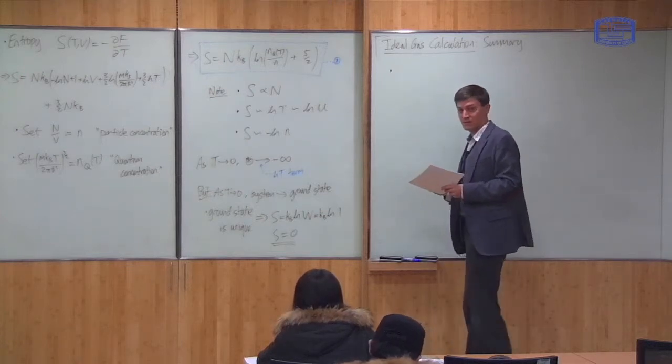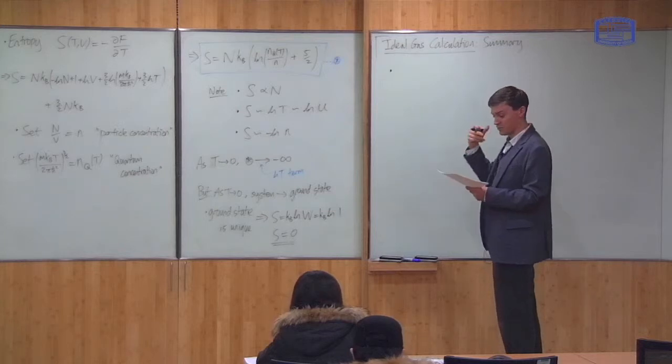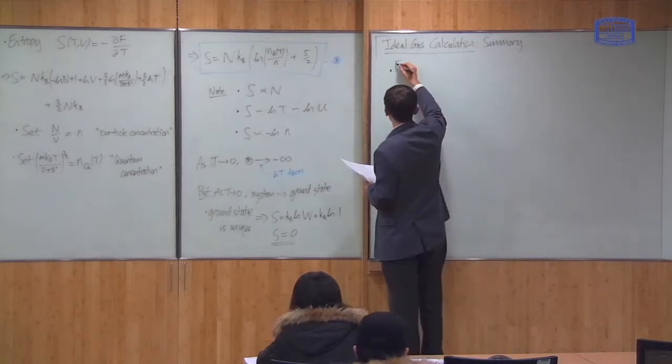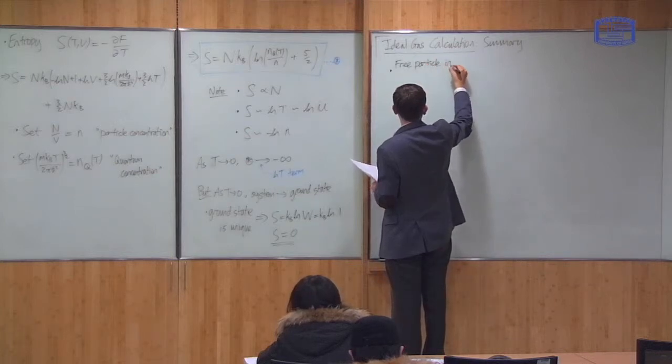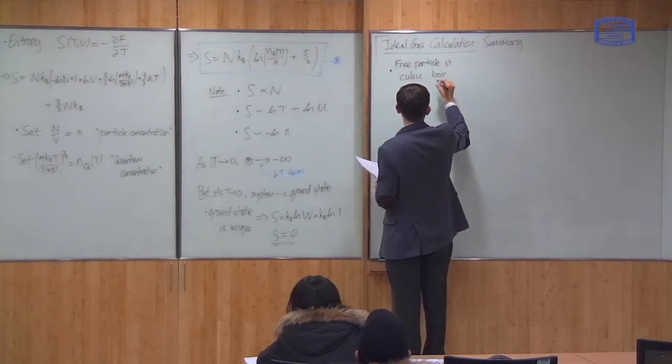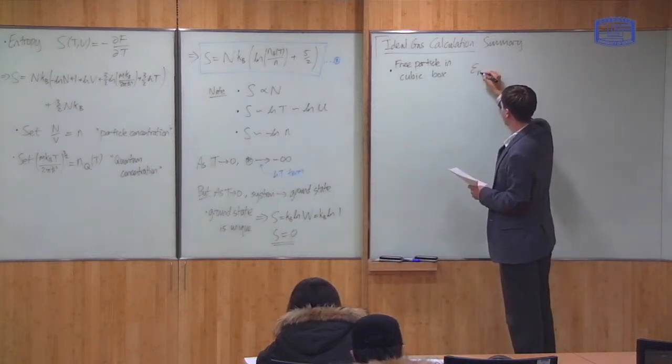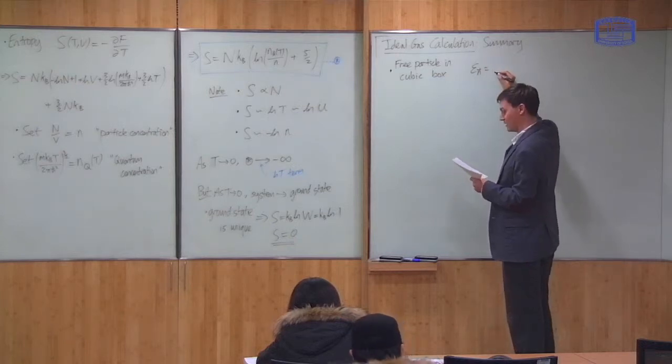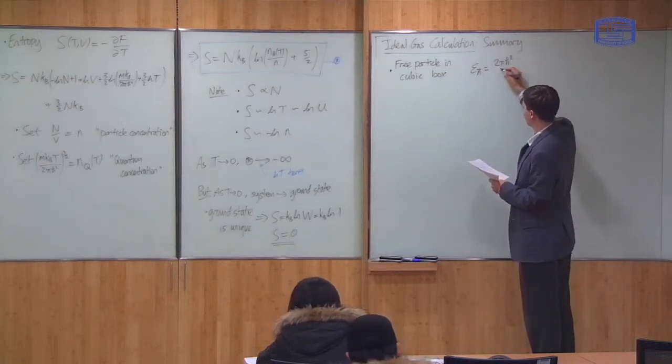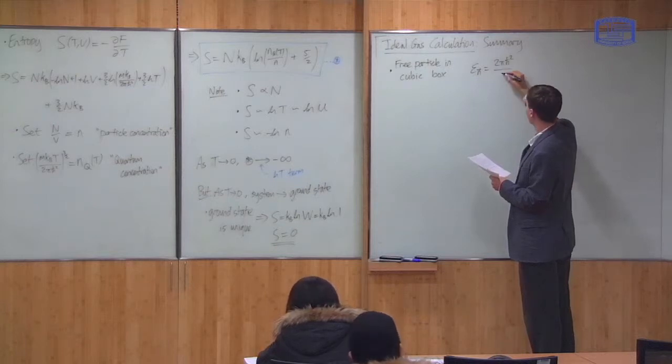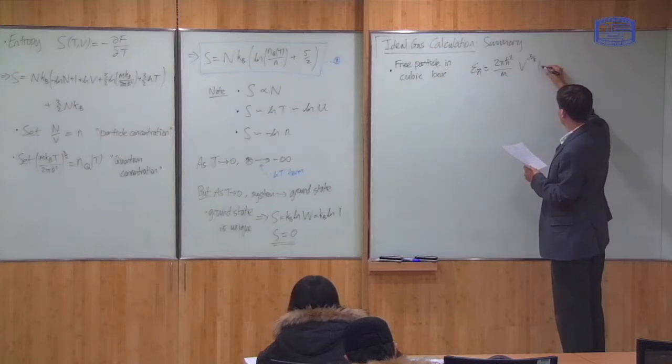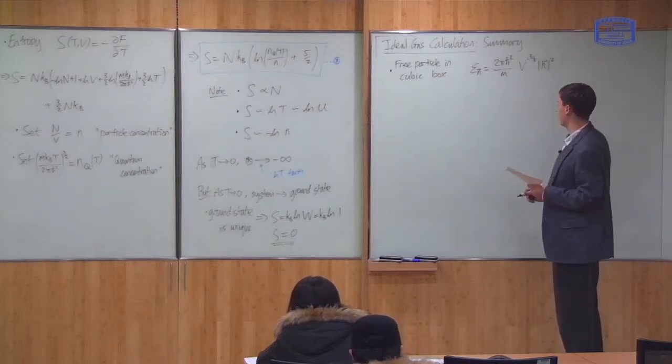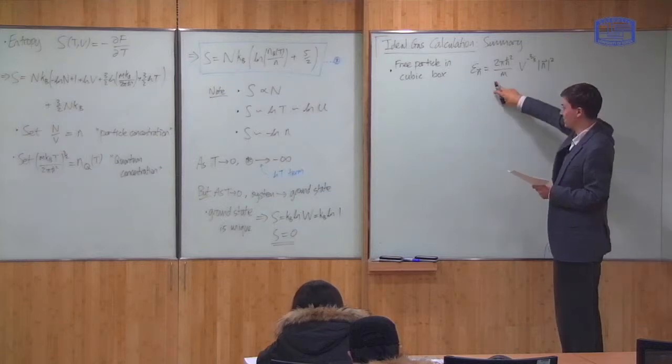What we started with was the quantum solution of a free particle in a cubic box. And we showed that the energy levels are labeled by a vector, and in particular, they were 2πh²/m times V to the -2/3, and the length of the vector n². So this was the first result we had.